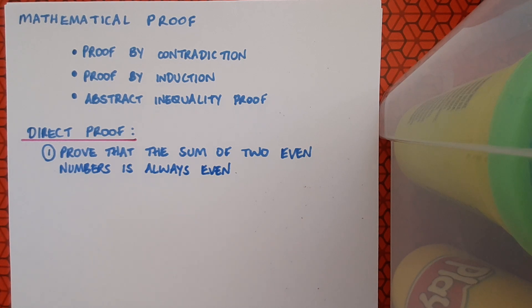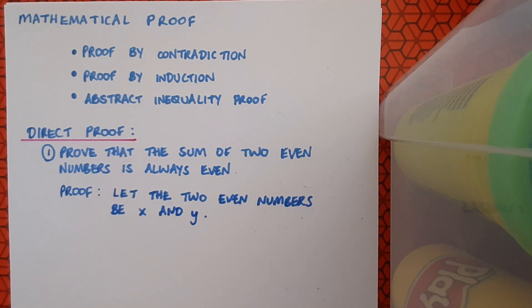In this example we're going to try to prove that the sum of two even numbers is always even. So here's our proof. Well first of all, let's define our two even numbers that we're talking about. So I'm just going to give them names first of all—let the two even numbers be x and y. So we've given them names and now let's look at their characteristic, the fact that they're even.